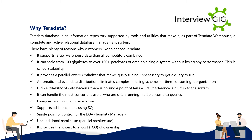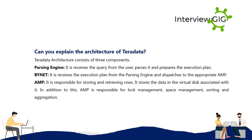Can you explain the architecture of Teradata? Teradata architecture consists of three components: the Parsing Engine, which receives the query from the user, parses it, and prepares the execution plan; BYNET, which receives the execution plan from the parsing engine and dispatches it to the appropriate AMP; and AMP (Access Module Processor), which is responsible for storing and retrieving rows. It stores data in the virtual disk associated with it, and is also responsible for lock management, space management, sorting, and aggregation.